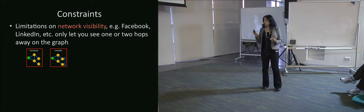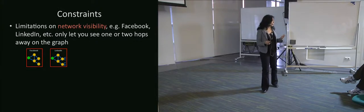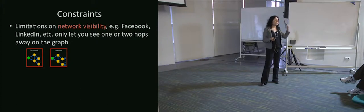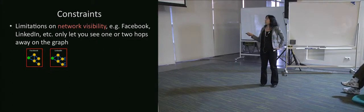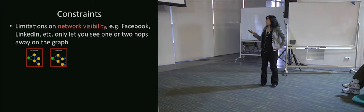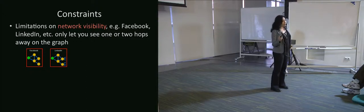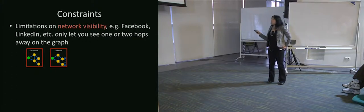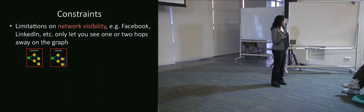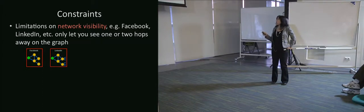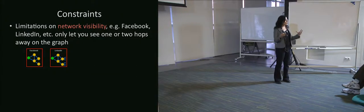The constraints we have here are: first, constraints on what parts of the network are visible to us. On Facebook and LinkedIn — and this actually changes over time — at the time we were doing this project, on Facebook you could see friends of your friends, but you couldn't see how many friends they had. On LinkedIn, you could see friends of your friends and also see how many people they were connected to. It doesn't sound like a vastly different amount of information, but it has huge consequences.